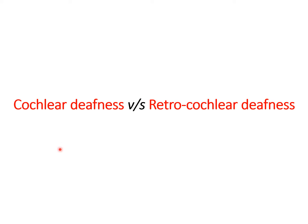Hello everyone. In this video I will be describing the differences between cochlear deafness and retro-cochlear deafness. When we see the pure tone audiogram of a patient with cochlear or retro-cochlear deafness, it will only show sensorineural hearing loss. So just by looking at the audiogram, we may not be able to differentiate these two types of deafness. For that, we need some special tests of hearing, and in this video I will be describing those tests.